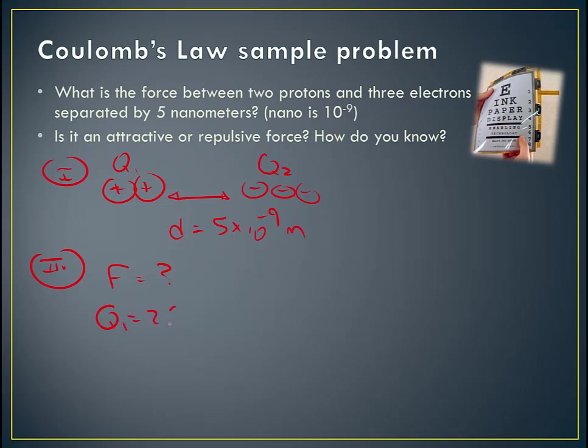So that would be 2 times positive 1.6 times 10 to the negative 19th coulombs, because that's the charge of one proton. And then Q2 is going to be equal to three electrons, which is 3 times negative 1.6 times 10 to the negative 19th coulombs.